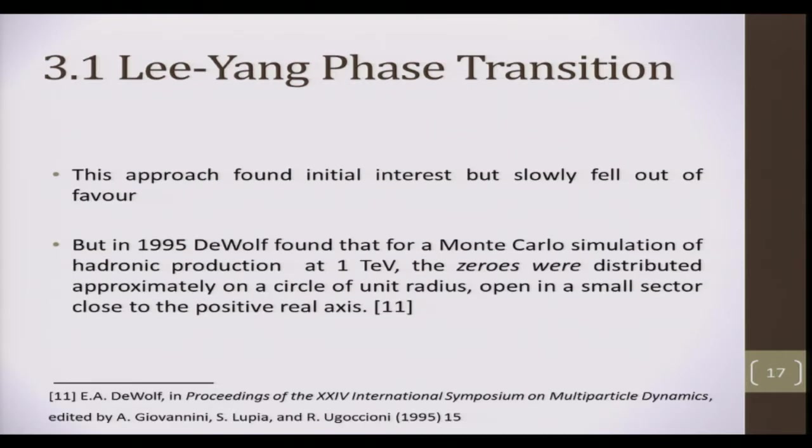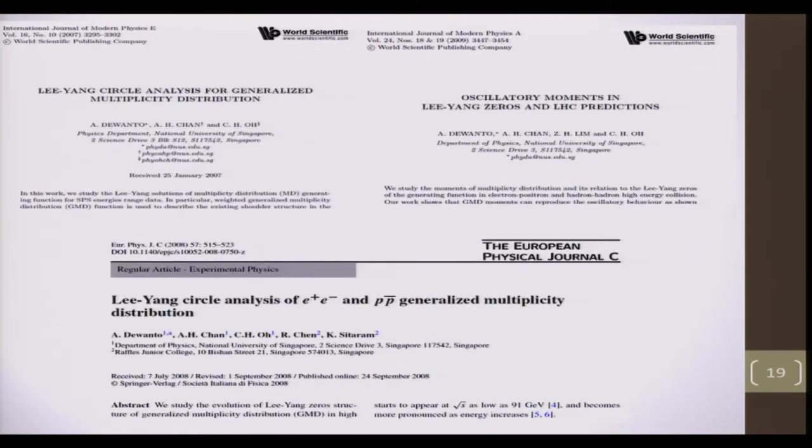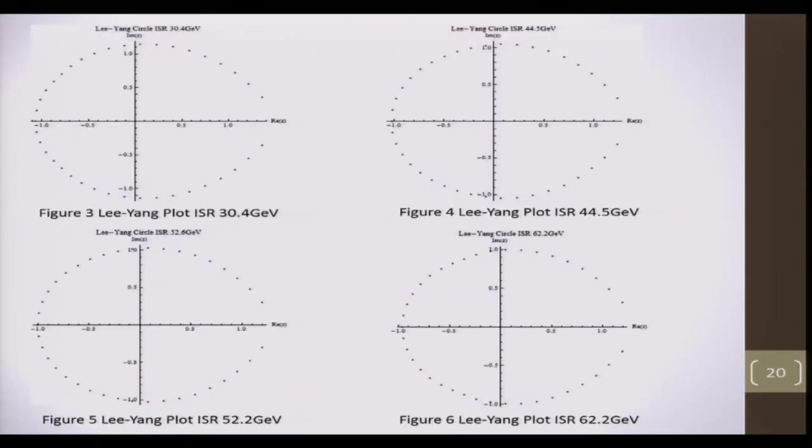This approach was followed with some interest early on, but fell out of favor. It was only in 1995, with work from D. Wolff, that interest in this approach began to warm up again. Here are some papers that are directly relevant to this talk, that apply the Lee-Yang zeros in studying high energy multiplicity distributions. In fact, there was a paper just uploaded to archive, I think last week, by a Japanese group studying the stability of Lee-Yang zeros in describing baryon net multiplicity.